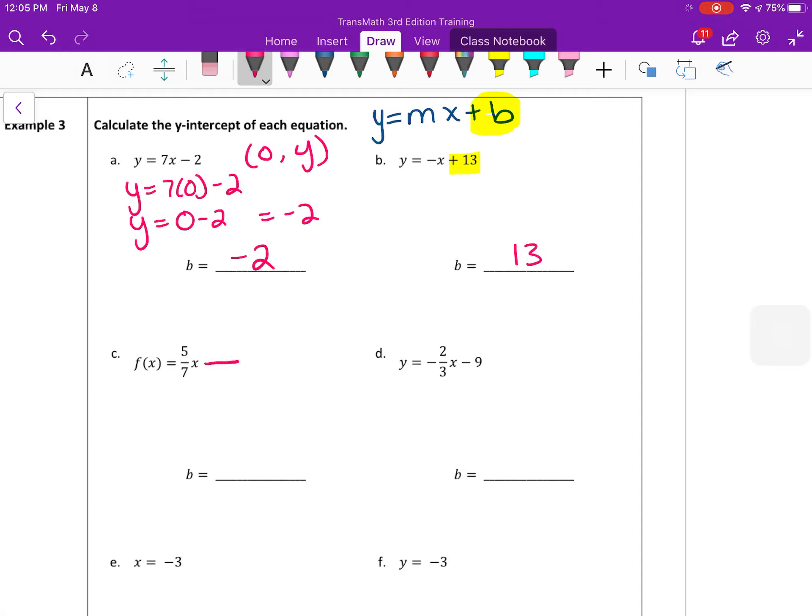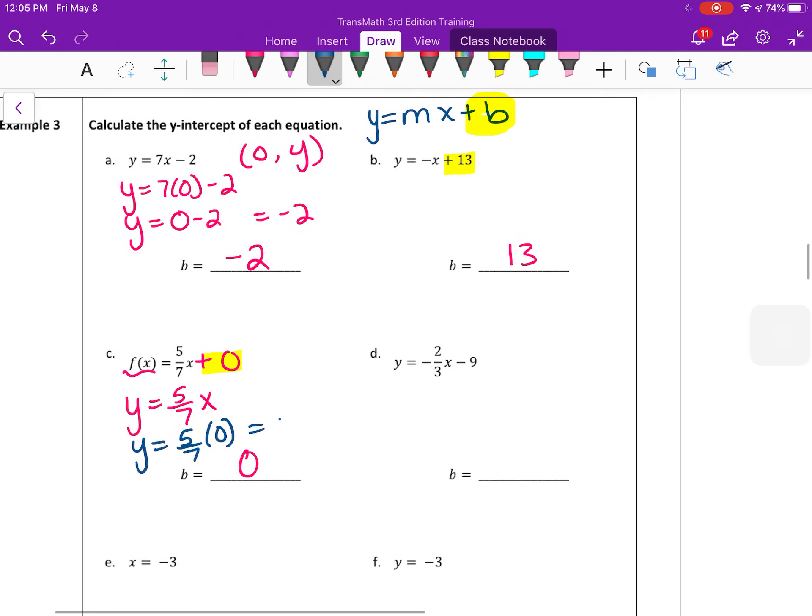Now here, there's nothing at the end being added. That could be the same thing as just plus 0. So the y-intercept is 0. This f of x is the same thing as y equals 5 7ths x. If you plugged in 0 for x, 5 7ths times 0, y equals 0. So your y-intercept for that equation is 0. In d, we have a negative 9 at the end. Your y-intercept is negative 9.